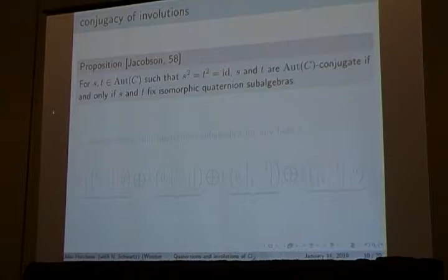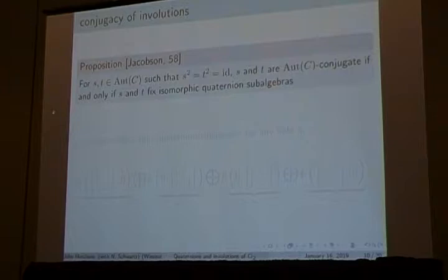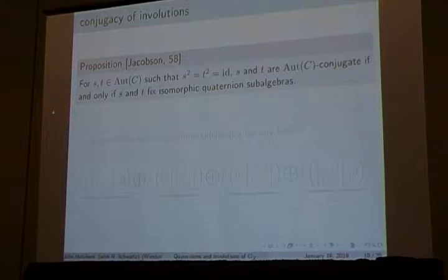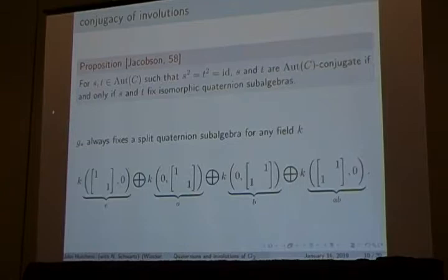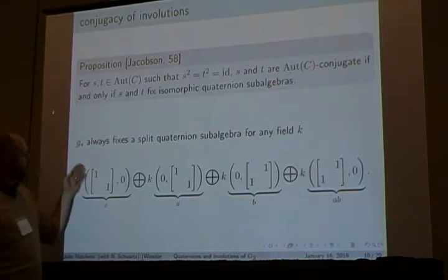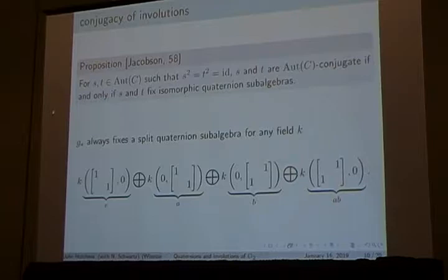What it comes down to is this proposition — I can't remember exactly how Jacobson labeled it, it might have just been a comment in a paragraph, but we're going to call it a proposition. It says: if two elements in the automorphism group of an octonion algebra square to the identity, they're conjugate if and only if they fix isomorphic quaternion subalgebras. So that first element we looked at — this is the quaternion subalgebra it fixes. If you take the norm, it's the determinant minus the determinant, it's zero, so this is a split subalgebra. You could also choose the first thing to be a split subalgebra and just negate the second part — that's another representative.